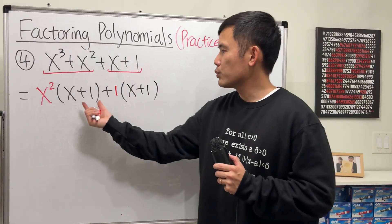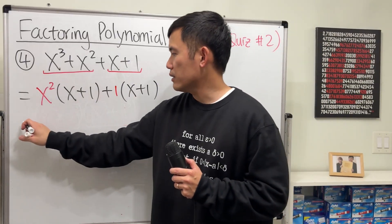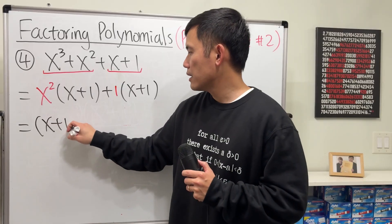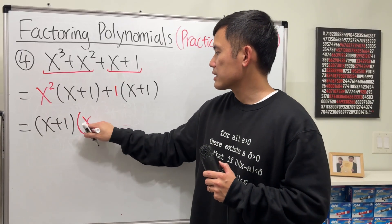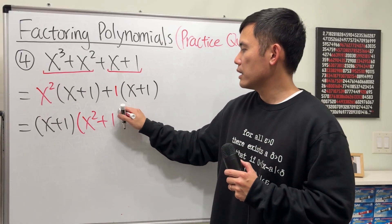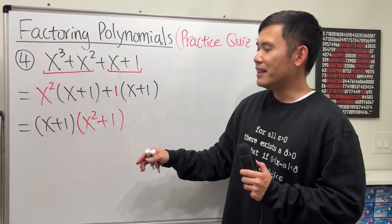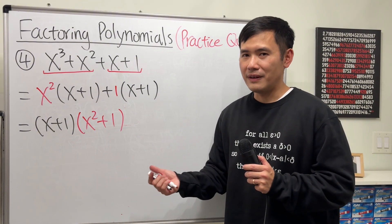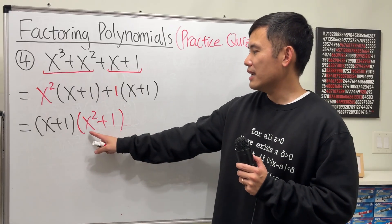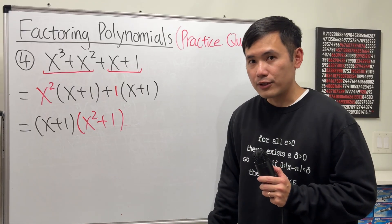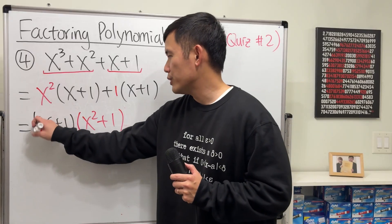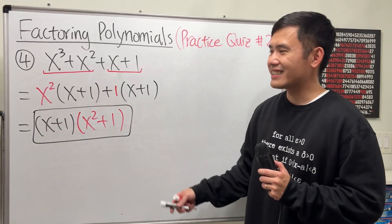Now notice, x + 1 is in common, so we can just factor it out. And then we have (x + 1)(x² + 1). Do we continue? No, we don't have to, unless you are going to do a complex number factoring, but we are not. Because x² + 1 is not factorable with real numbers. So we really just stop right here.